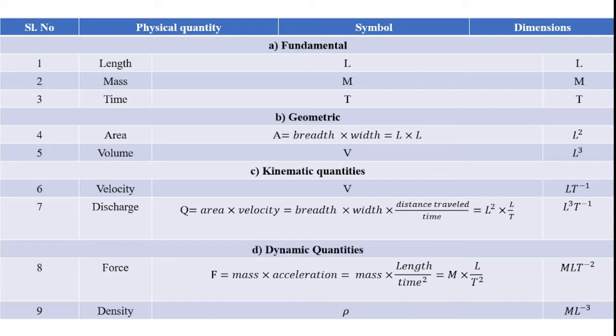And then volume. Length into breadth into width is the formula for volume. So the dimension for volume is L cubed, because length, breadth, and width all have dimension L. Multiplying them together gives L cubed, so the dimension of volume is L cubed.